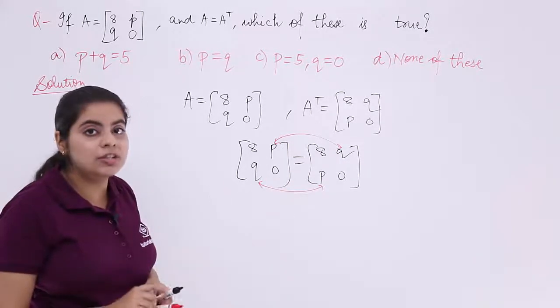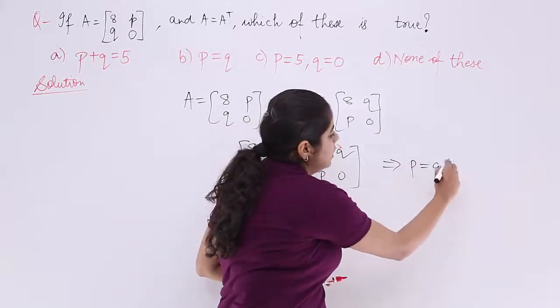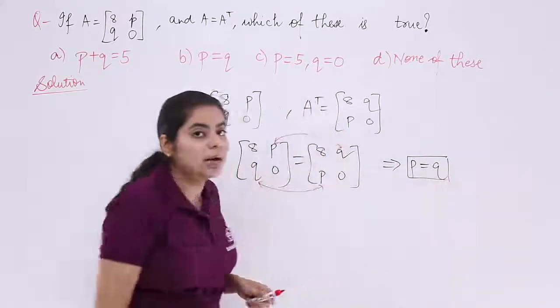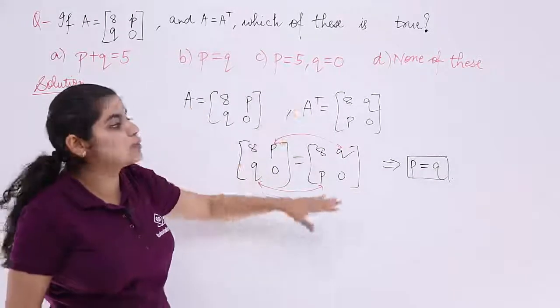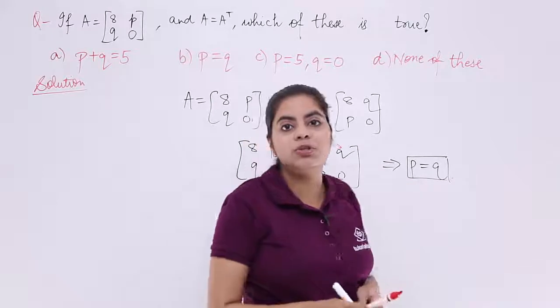So what is the next condition that we have found out? We have basically found out that P is equal to Q from the above condition A is equal to A transpose and this analysis. Now which option tells me that P is equal to Q? Let's check.